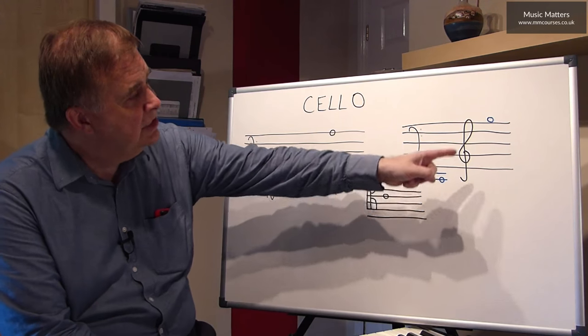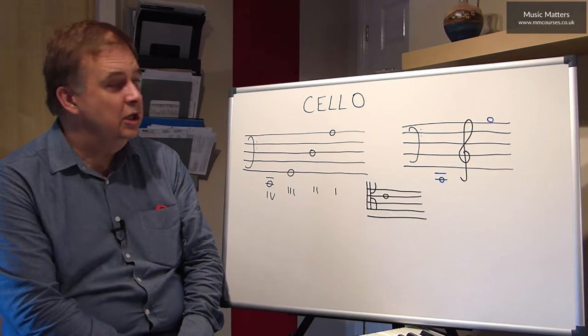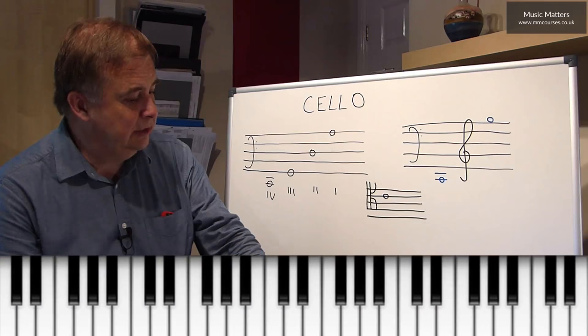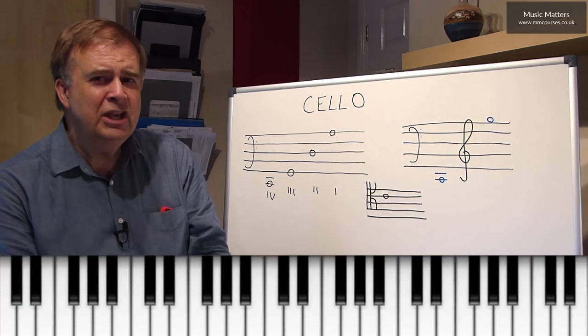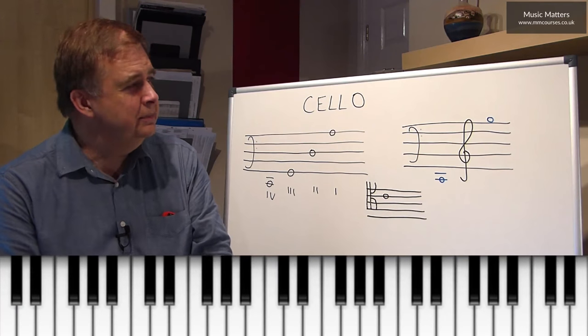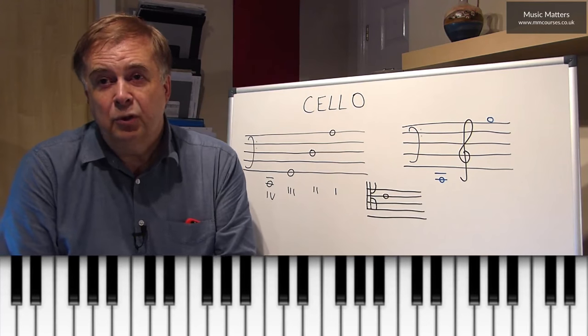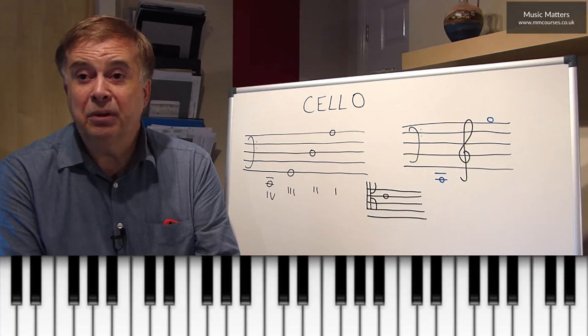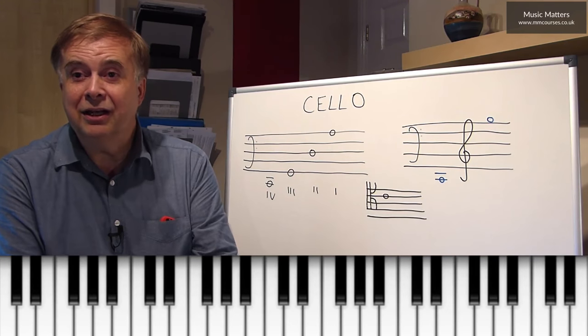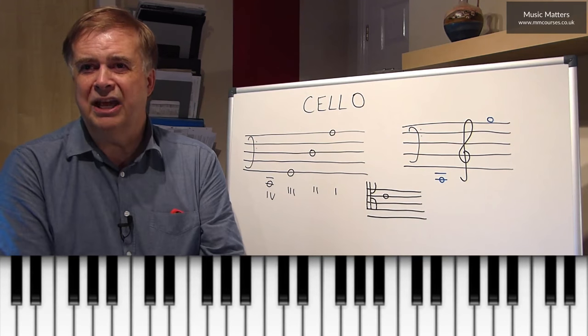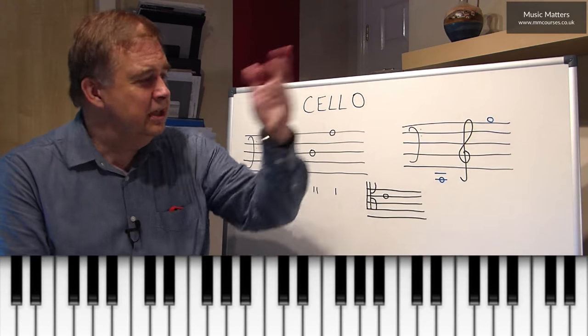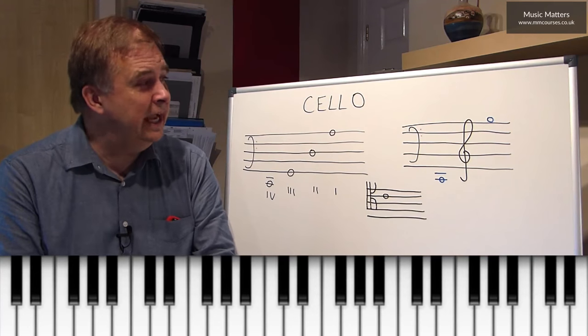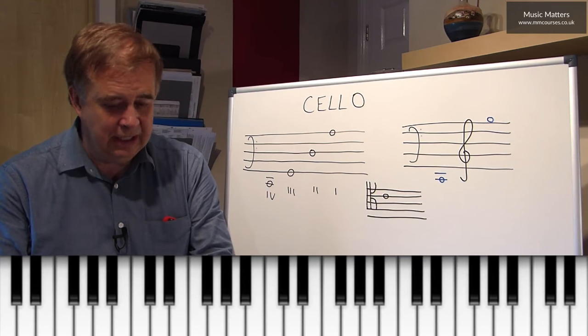And over here, I've indicated the range of the cello. So obviously this C is the lowest note that you can possibly play on the cello. And the cello has a huge range. Now there's some question as to exactly what the top note could be. It mainly depends on the proficiency of the player actually. It gets harder and harder the higher you go to produce a good sound and to play it in tune.